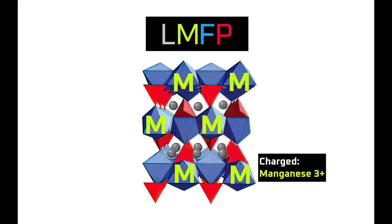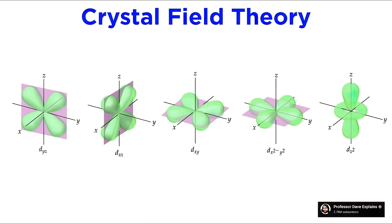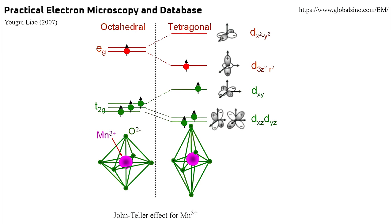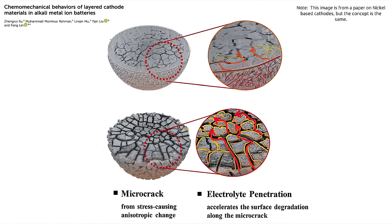What are Jahn-Teller effects? All atoms have electrons which configure themselves in orbitals around the atom. In some metallic elements, when the charge state of the atom changes by gaining or losing an electron, the orbitals become unbalanced because the energy is no longer distributed evenly, and the shape of the orbitals becomes distorted. If the atom is part of a crystal, the distortions change the angles and distances between that atom and the other atoms in the crystal structure, which distorts the shape and volume of the crystal structure.